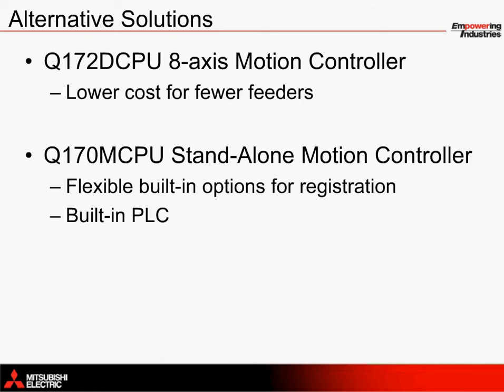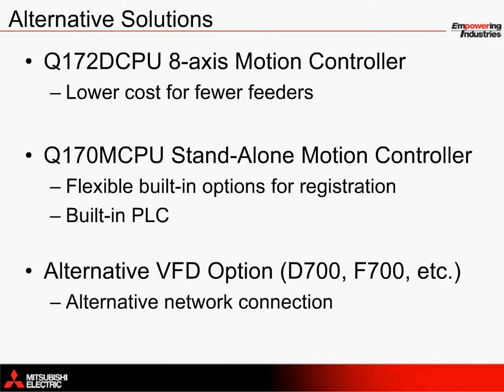Instead of the E700 inverter for controlling the unloading conveyor, a D700 or F700 inverter can be used instead. This provides an alternative network connection or simple control via an external analog or digital signal.